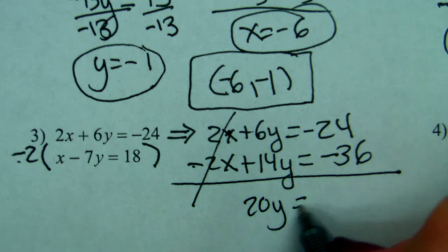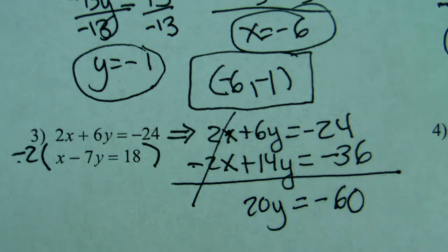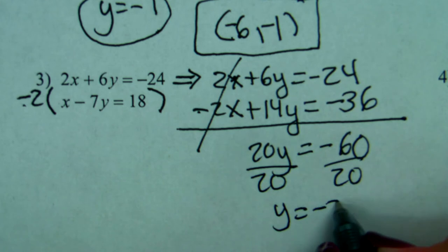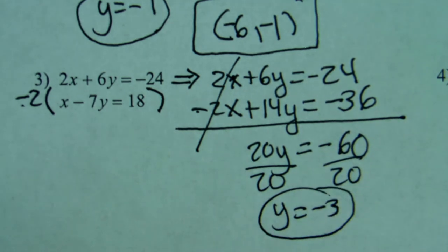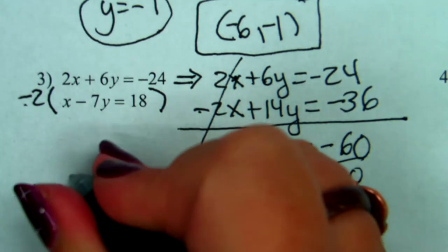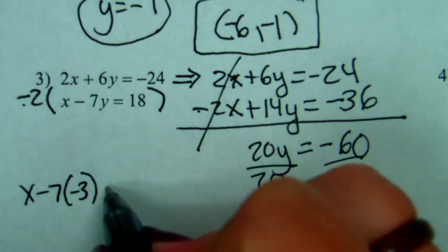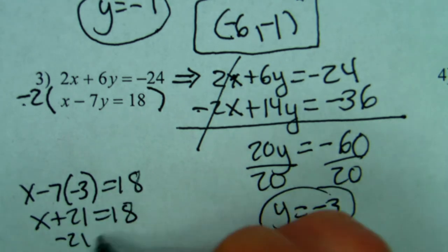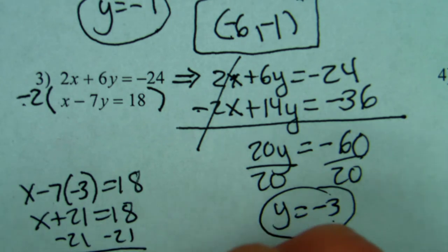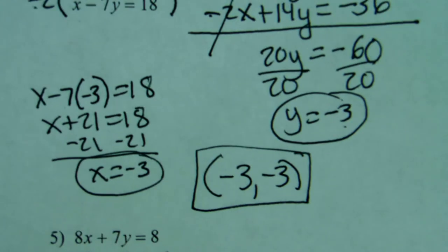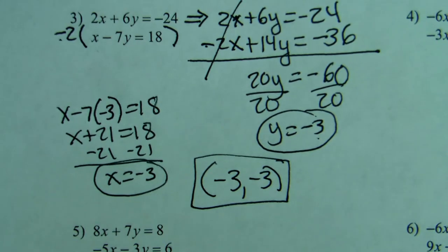So 20y equals negative 60. Divide by 20, y equals negative 3. Then go back to an equation — the bottom one is simpler. We do x minus 7 times negative 3, substituting negative 3 equals 18. x plus 21 equals 18. Subtract 21, x equals negative 3. So the ordered pair is negative 3, negative 3.